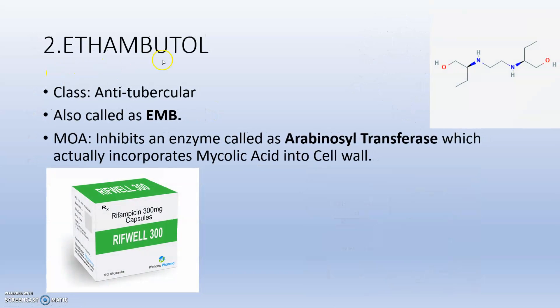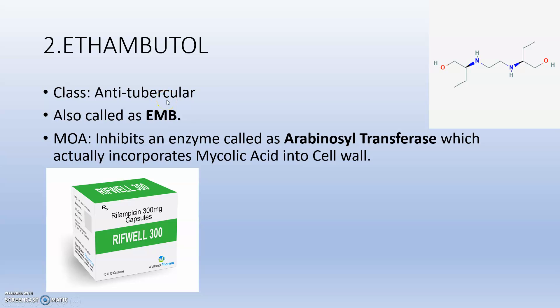The next drug is ethambutol, class anti-tubercular, also called EMB. The mechanism of action: the bacteria synthesize mycolic acid, which is incorporated into the cell wall with the help of an enzyme. Ethambutol inhibits that enzyme — arabinosyl transferase — so the incorporation of mycolic acid into the cell wall does not happen.